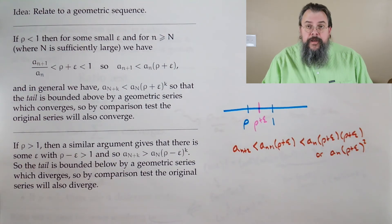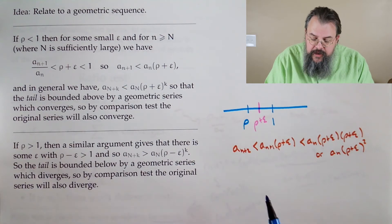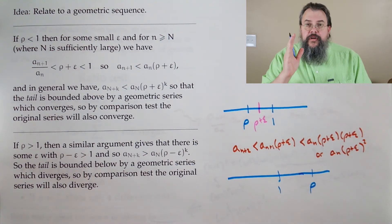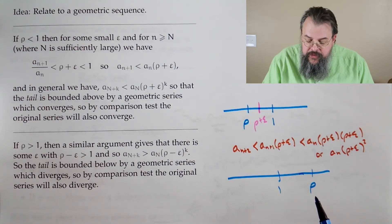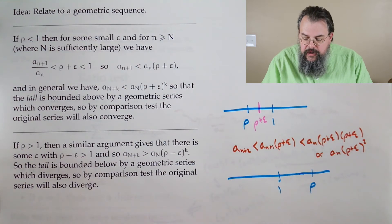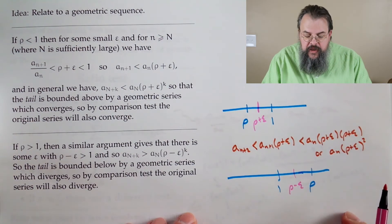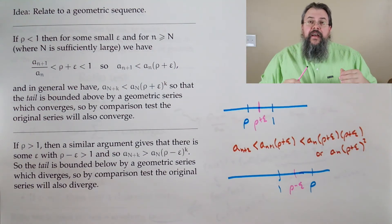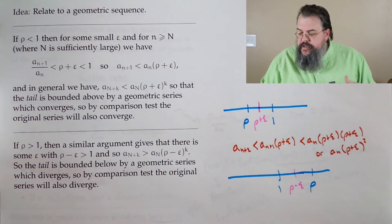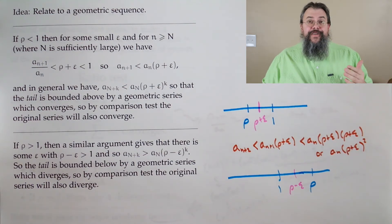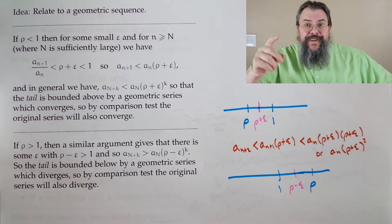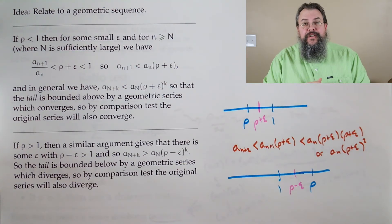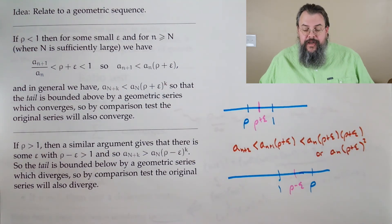What happens if rho is bigger than 1? Here's 1, here's rho — we can find something in the middle. By the same process, a_{n+k} is bounded below by a_n(rho - epsilon)^k, which grows bigger and bigger. But even simpler: if the terms keep getting bigger and bigger, they can't go to zero. And if the terms don't go to zero, it has to be a divergent series. That's our conclusion for the ratio test: look at next term over current term, take a limit, and see what happens.